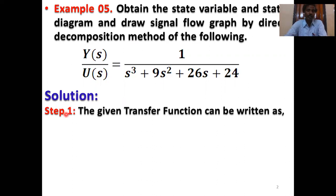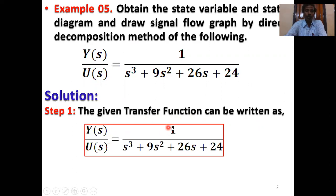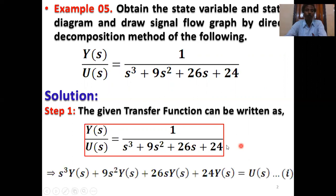Solution. Step 1: the given transfer function can be written as Y(s)/U(s) = 1 / (s³ + 9s² + 26s + 24). Then cross-multiplying, U(s) × 1 and Y(s) × (s³ + 9s² + 26s + 24), we get s³·Y(s) + 9s²·Y(s) + 26s·Y(s) + 24·Y(s) = U(s). This is equation number 1.